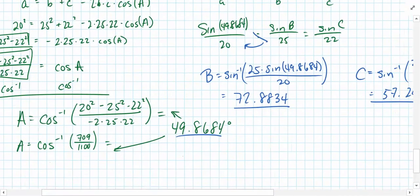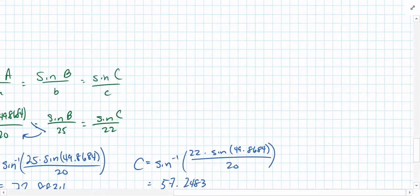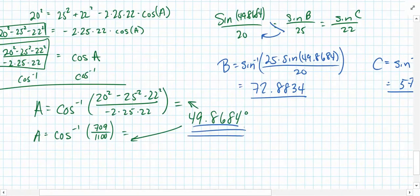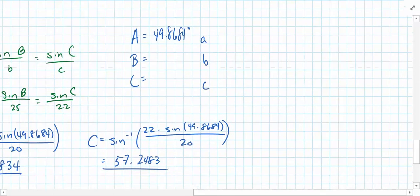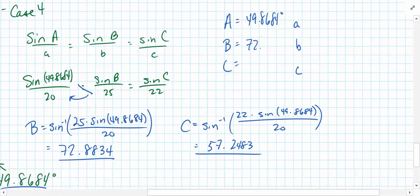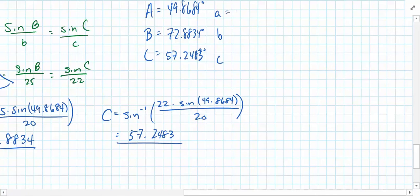So we now have all of the parts, although our work is very messy. Let's record our final answers in a nice, neat response. So I'll put those here. We're looking for side length and angles, A, B, C. So these are the angles, these are the side lengths. Angle A we found here, 49.8684 degrees. Angle B we found here, 72.8834 degrees. Angle C, 57.2483 degrees. Side length A, B, and C were given to us, 20, 25, and 22.